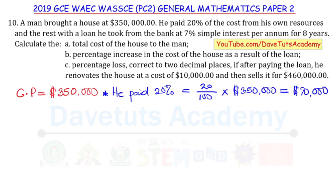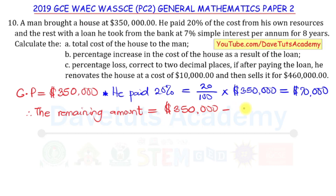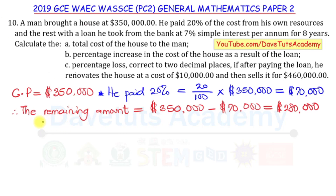Since he paid $70,000, the remaining amount is $350,000 minus $70,000, which equals $280,000. So $280,000 is what the man has as a balance, and that is what he took as a loan from the bank.